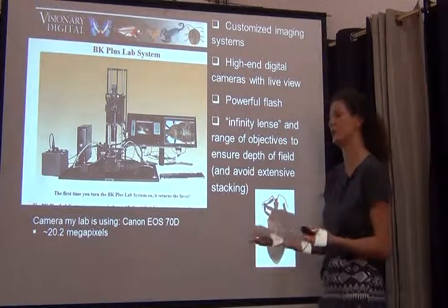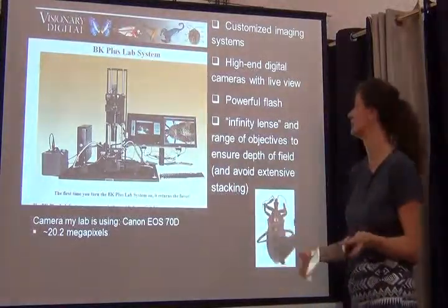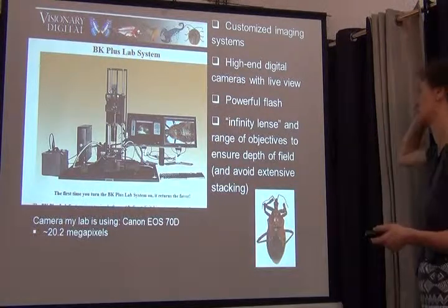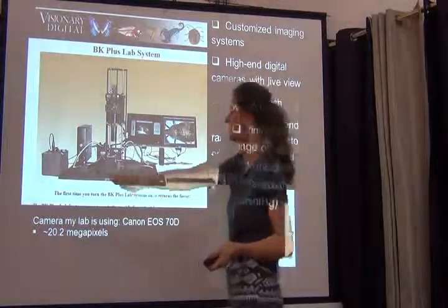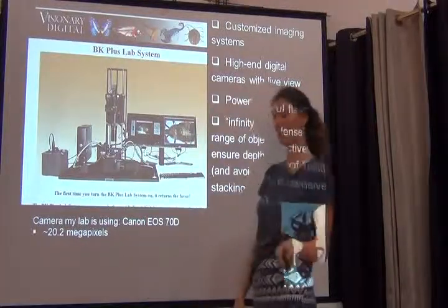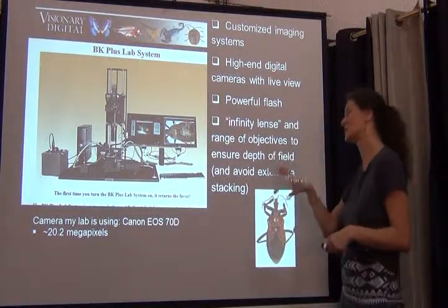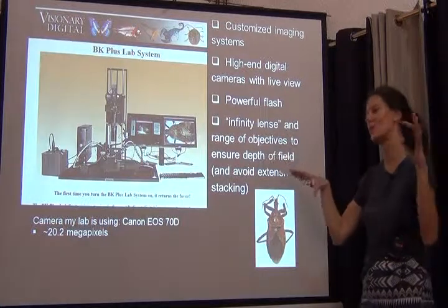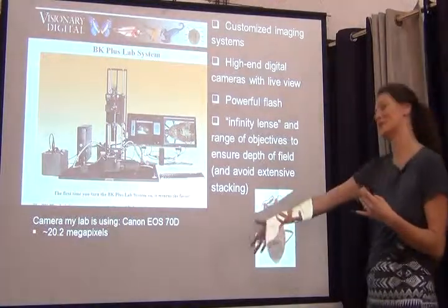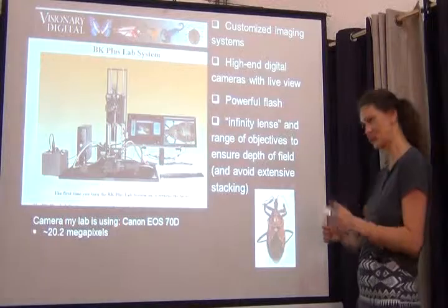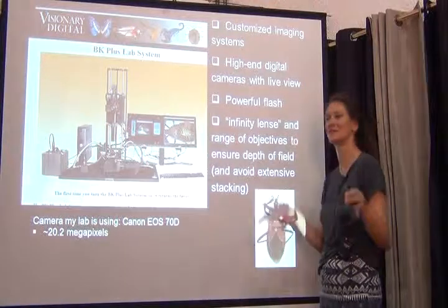I'm very happy that by now a lot of higher-end cameras do have the live view option — it was very important to look at that closely when we purchased our new camera. The image you see on the computer screen now with the Canon EOS software is really quite good and sufficient to manipulate the image. What's really special about this system is the integrated lighting — this big box is a flash, and it's the most powerful and also unfortunately the noisiest flash I've ever encountered.